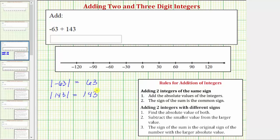Step two, we subtract the smaller value from the larger value, which means we now subtract 63 from 143. Subtracting, three minus three is zero, and 14 minus six is eight. So this difference is 80.